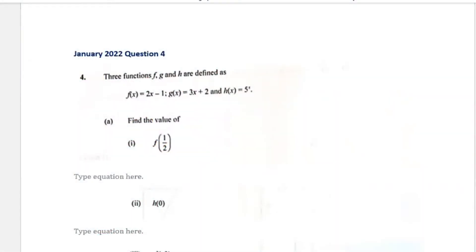Welcome back to another video. Today we'll be working January 2022 Question 4. It says three functions f, g, and h are defined as: f(x) = 2x minus 1, g(x) = 3x plus 2, and h(x) = 5 raised to the power of x.